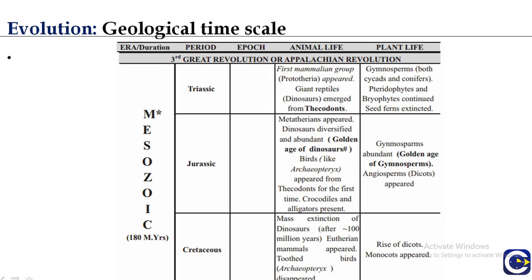The Mesozoic era is divided into Triassic, Jurassic, and Cretaceous periods and is known as the age of reptiles. In the Triassic, the first mammalian group appeared along with giant reptiles and the appearance of dinosaurs. The Jurassic period was the golden age of dinosaurs, where they were most prominent and abundant on earth.